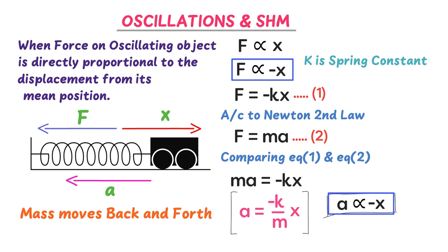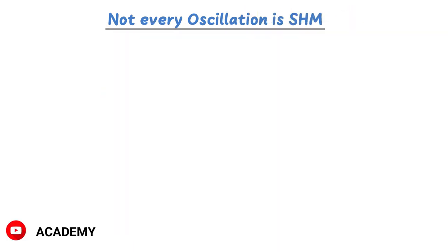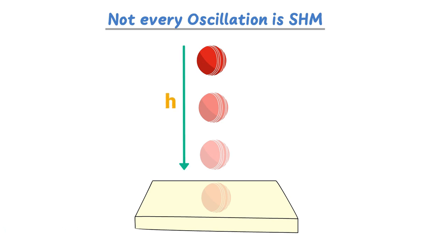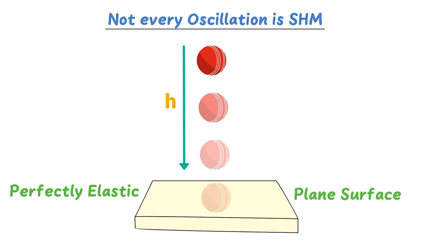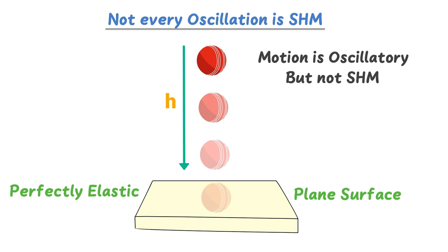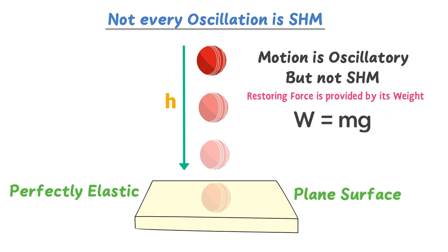As a bonus tip, not every oscillation is SHM. For example, when you drop a ball from a certain height H onto a perfectly elastic and plain surface, the motion of the ball is oscillatory but not SHM. This is because the restoring force on the ball is provided by its weight W = Mg, not by the vertical height H — so the condition F ∝ x is not satisfied.